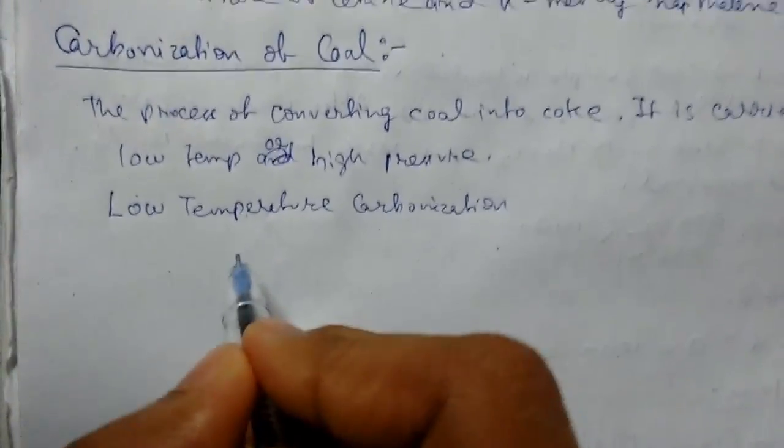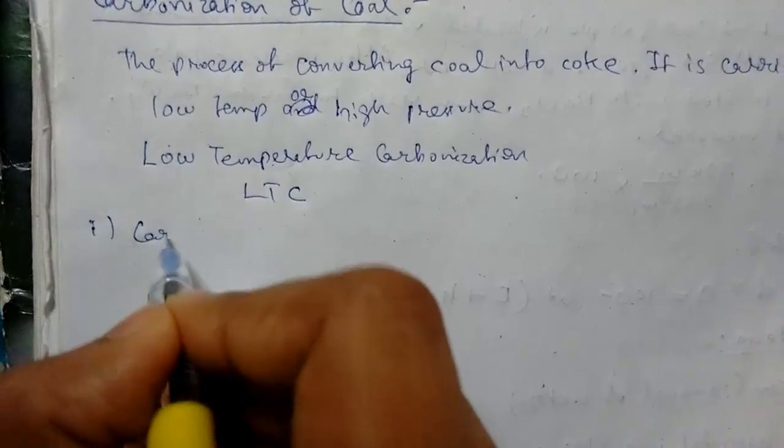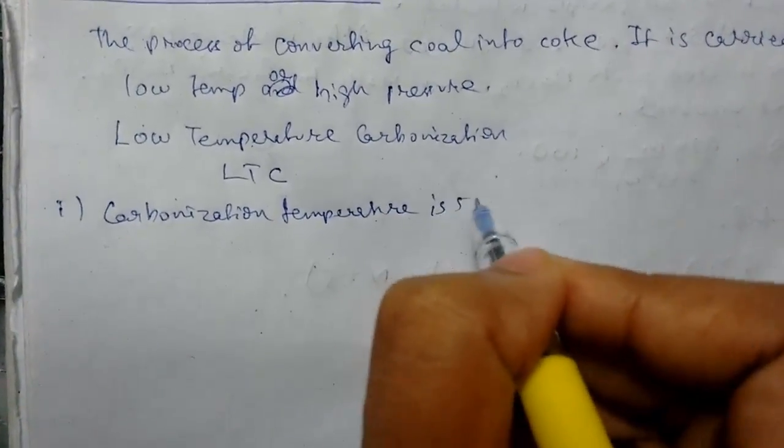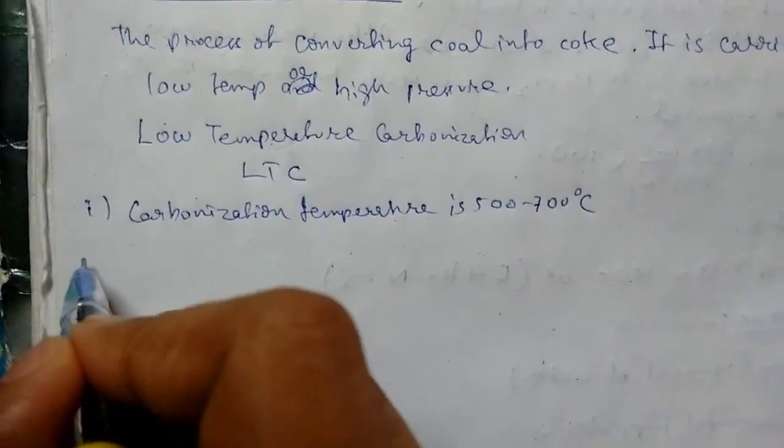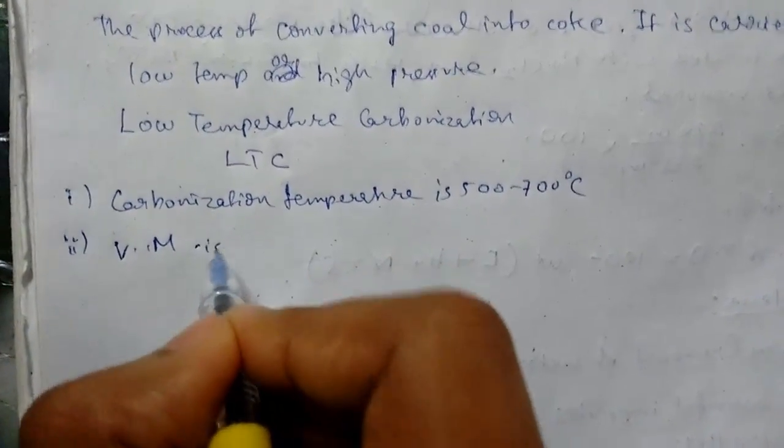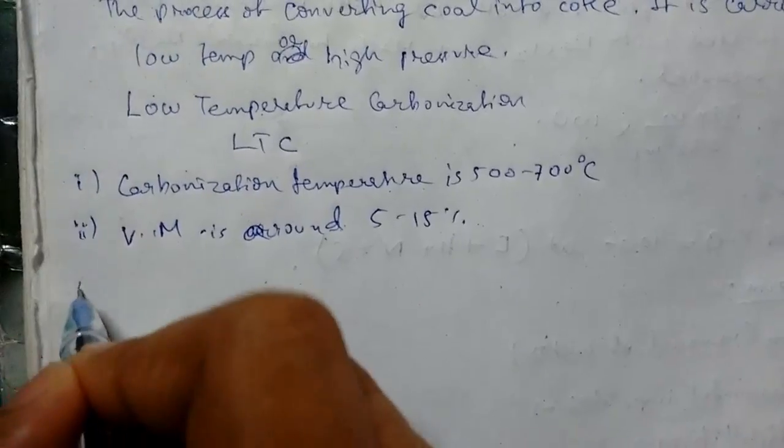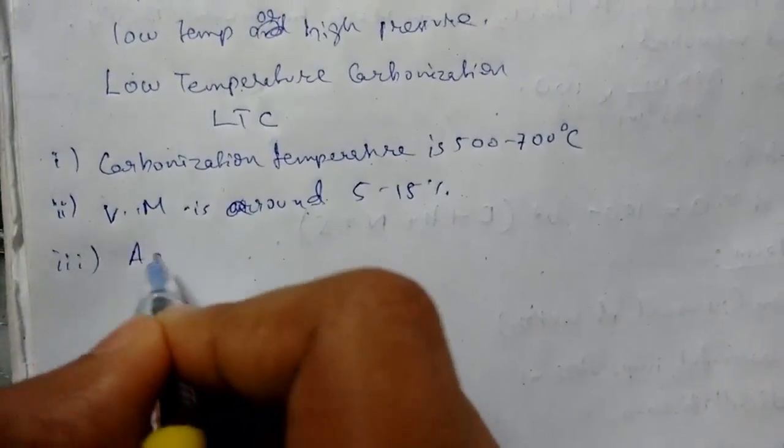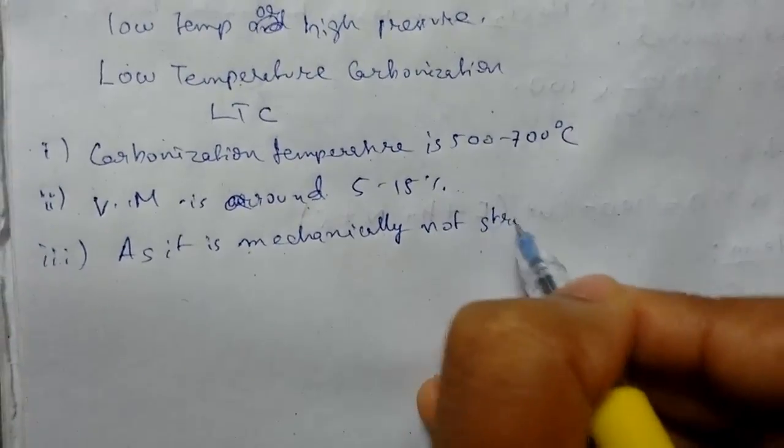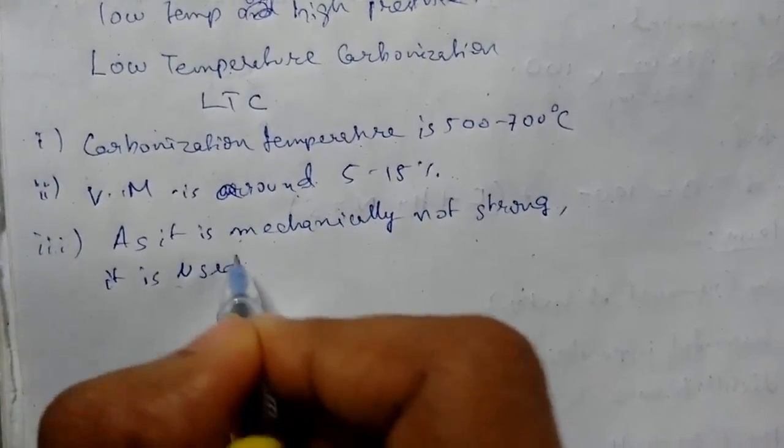Low temperature carbonization, known as LTC, short form is LTC. We will discuss its characteristics. Carbonization temperature is 500 to 700 degrees Celsius. Number two, volatile matter content is around 5 to 15 percent. Number three, as it is mechanically not strong, it is used for domestic purposes.